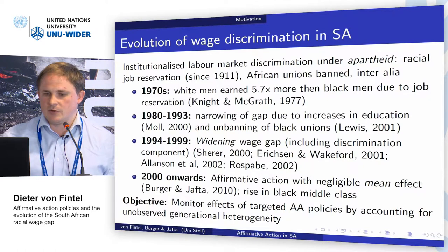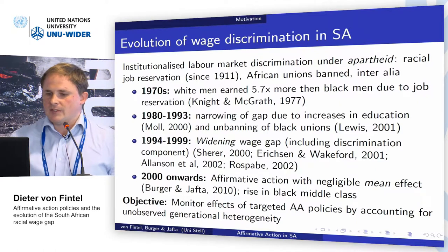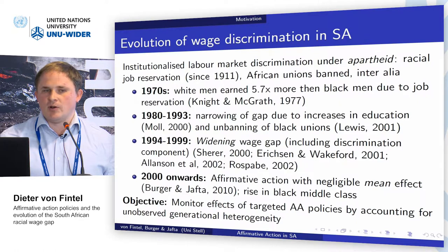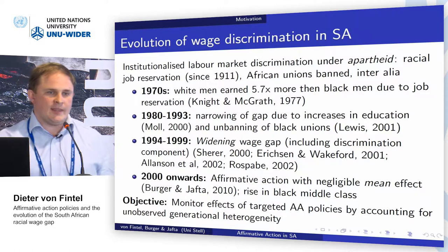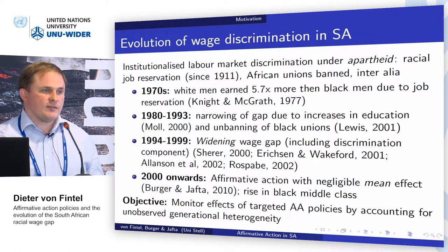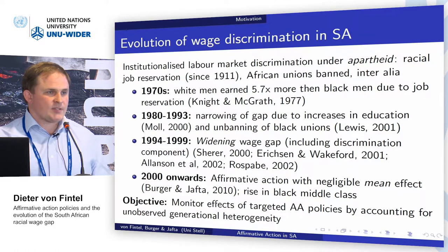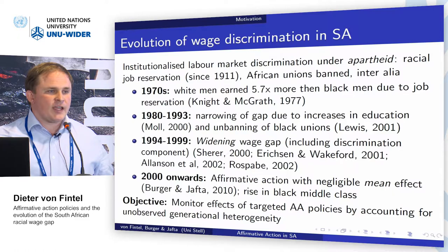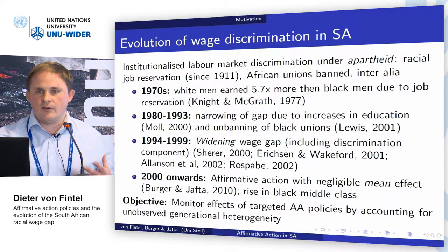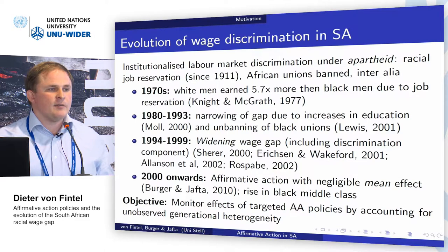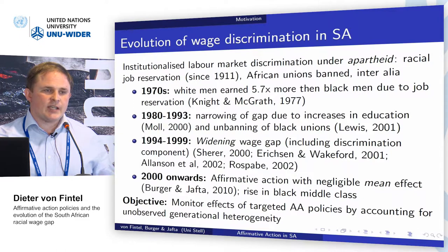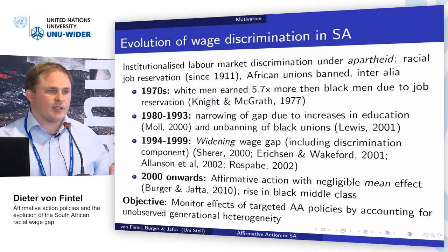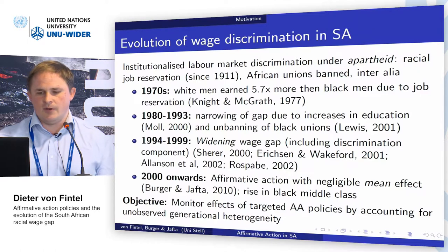From 2000 onwards there was an active affirmative action policy, but the evidence suggests a negligible effect at mean incomes. There was however a positive effect at the top of the income distribution, where wage gaps narrowed. This suggests that affirmative action removed discrimination within the elite but not for the average worker. This led to the term broad-based black economic empowerment, which was supposed to reach the entire income distribution, not just the top.